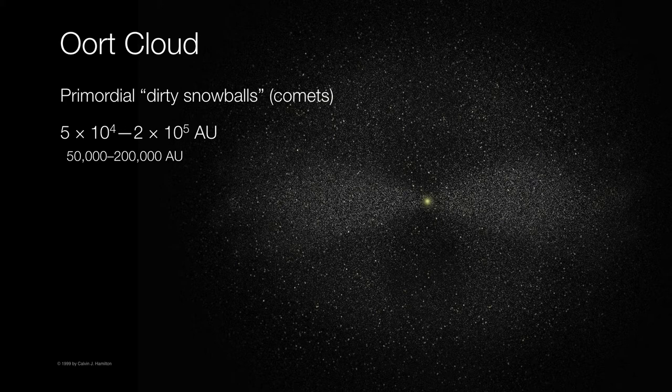It's also worth noting that the distances between each of these snowballs is extremely vast. In fact, they're about as far apart from one another as Earth is from Saturn. So there's no way you would actually see these comets from this vantage point — we're turning up the brightness knob to let you see them.